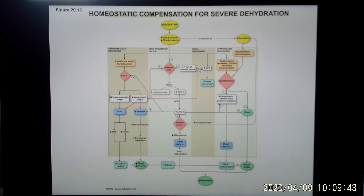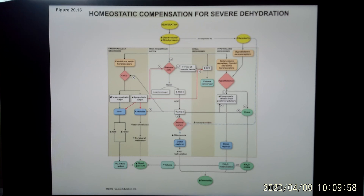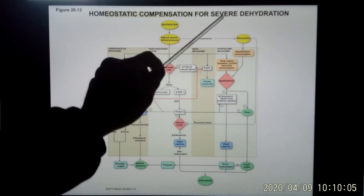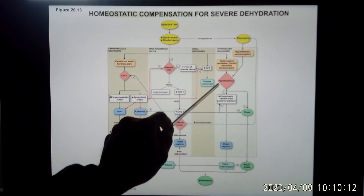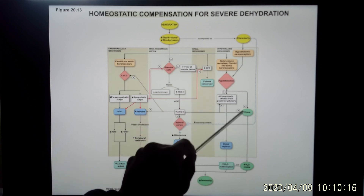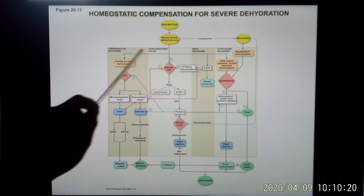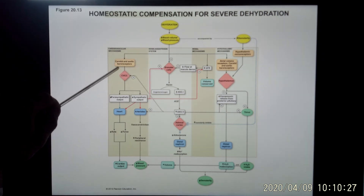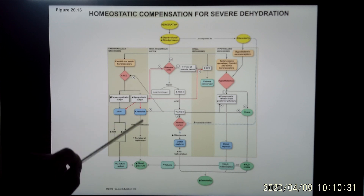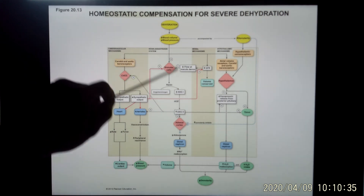Now let's look at the severe dehydration situation — this is you got lost in the desert for three days and cannot find water. Your body will produce almost no urine. Let's see what happens in severe dehydration. Similar to a mild dehydration situation: your osmolarity increase will trigger the hypothalamus to release vasopressin, and you feel very thirsty and look for water — this part is the same. Also, low blood volume and low blood pressure will cause the cardiovascular control center to increase sympathetic output and decrease parasympathetic — that part is also the same.